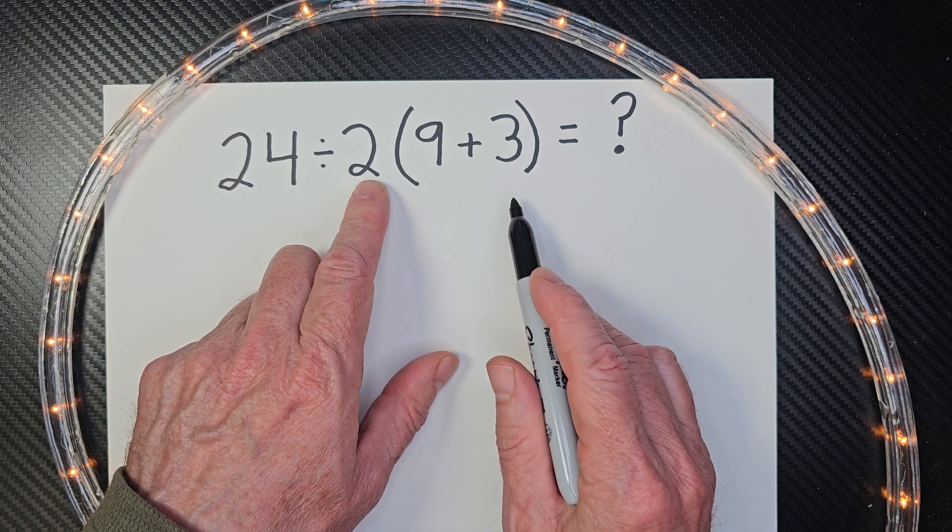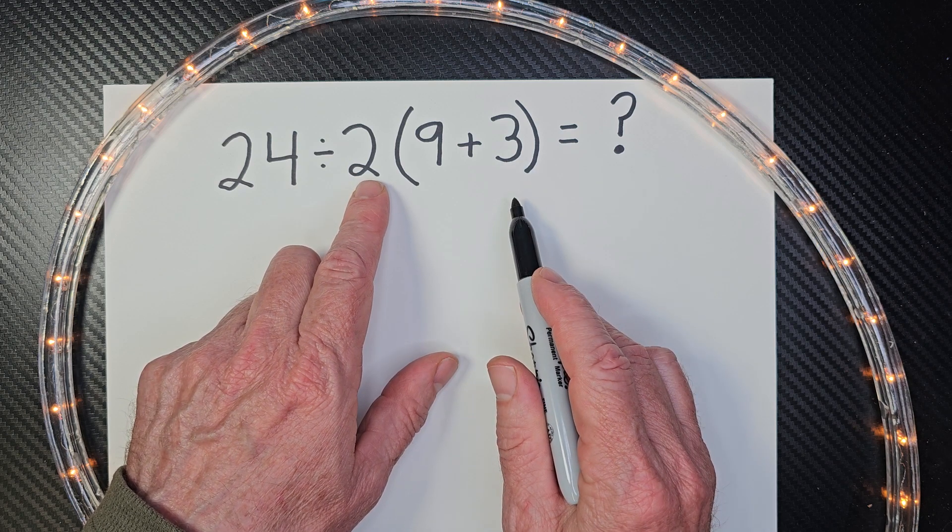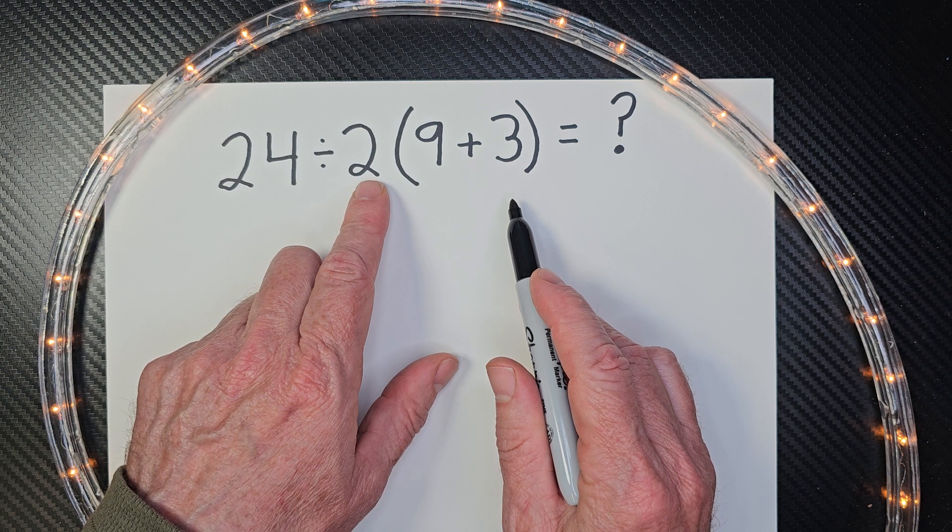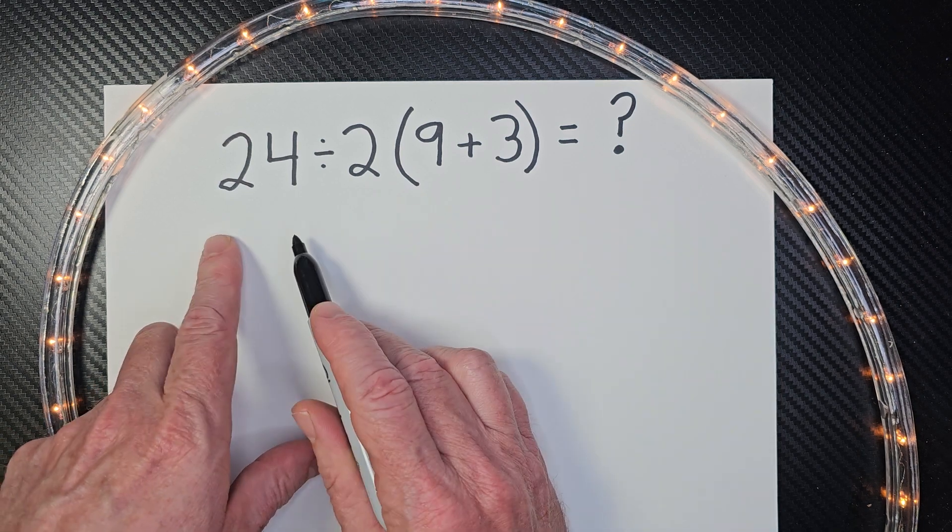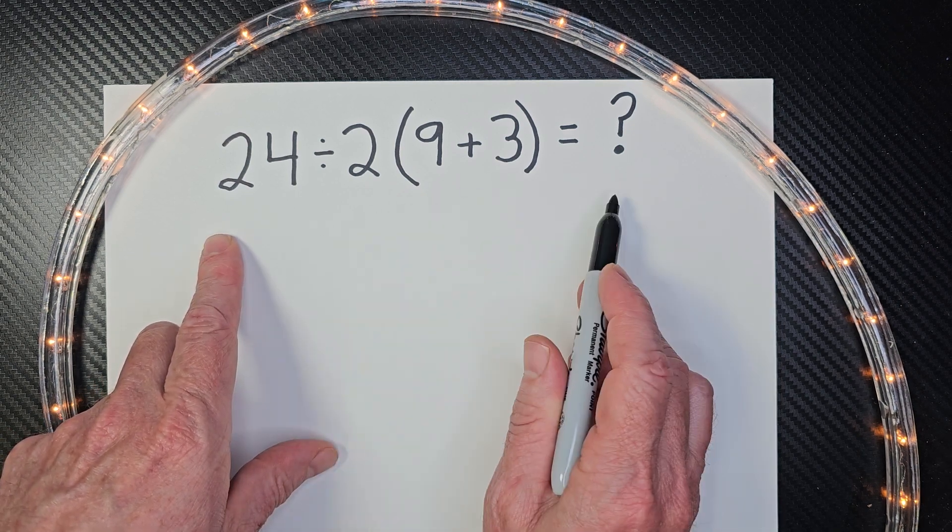Now, remember our order of operation. We do what is inside parentheses first, then exponents, then multiplication and division from left to right, and addition and subtraction from left to right.